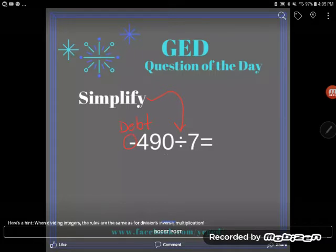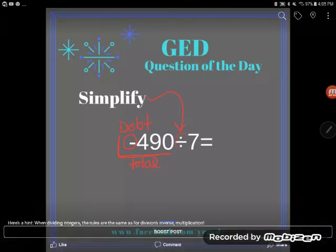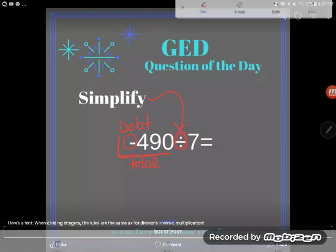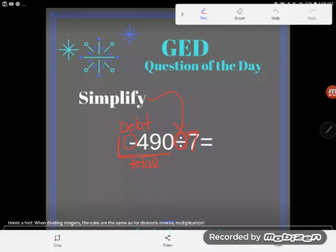I want you to imagine that when we're dividing, we start with a total. This is the total debt that you owe—you owe $490 total. The act of dividing means that it's broken into equal groups, in this case seven equal groups. So it's like I owe $490 among seven people.